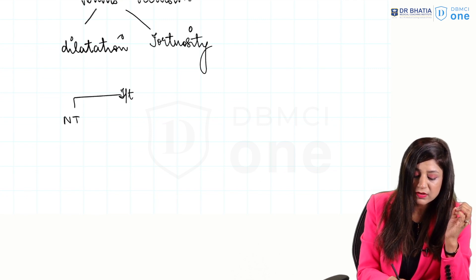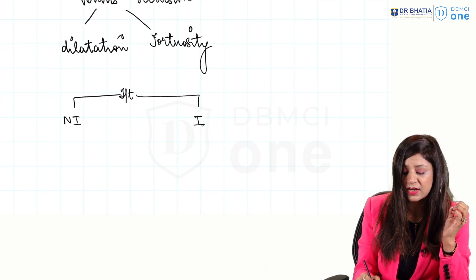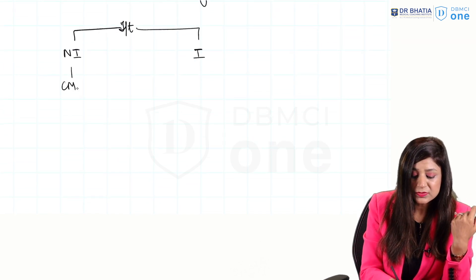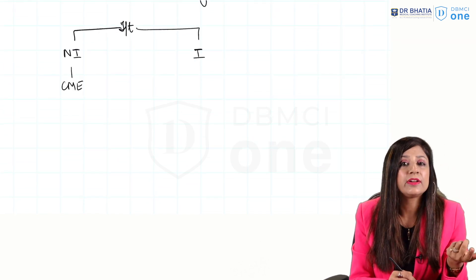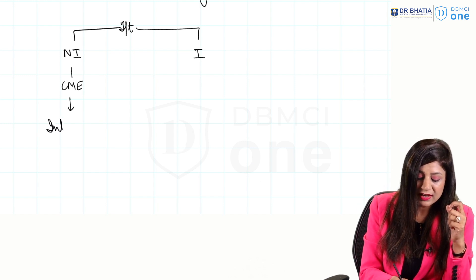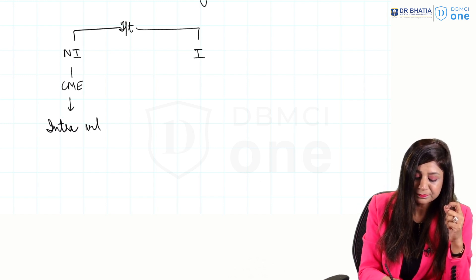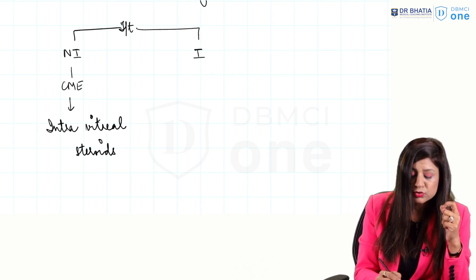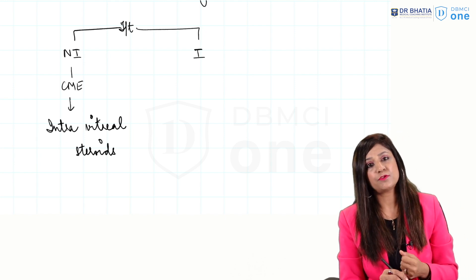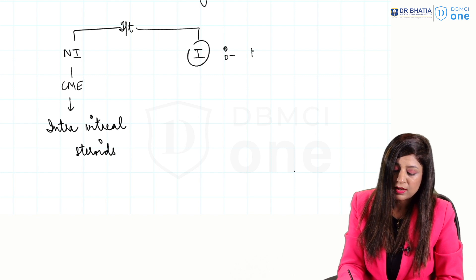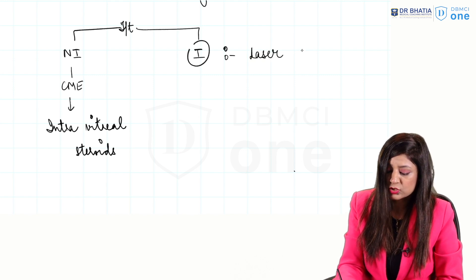Treatment depends on whether it is a non-ischemic or ischemic variety. In non-ischemic CRVO, only cystoid macular edema is present, so we give intravitreal injection of steroids or triamcinolone for the macular edema. If it is the ischemic variety, we are going to do laser photocoagulation.